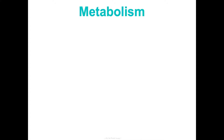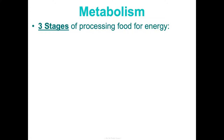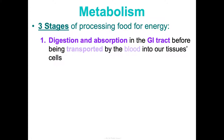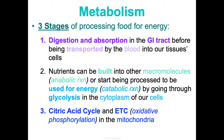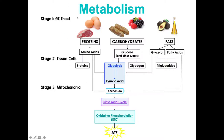There are three stages of processing our food for energy. Stage one is digestion and absorption in the GI tract, where nutrients are transferred by our blood into tissue cells. Stage two: nutrients transported to cells can be built into macromolecules — an anabolic reaction — or processed for energy, a catabolic reaction, by going through glycolysis in the cytoplasm. Stage three continues through the citric acid cycle (Krebs cycle) and the electron transport chain or oxidative phosphorylation in the mitochondria.